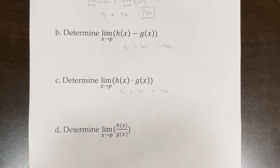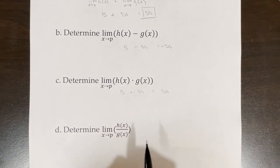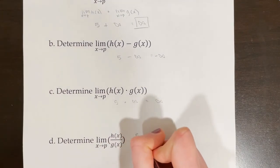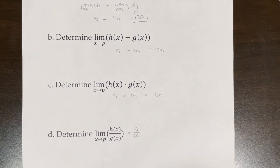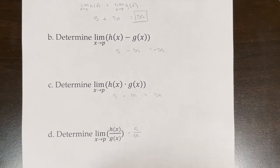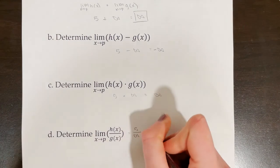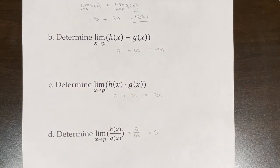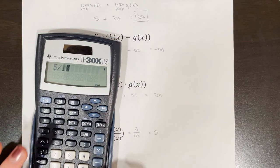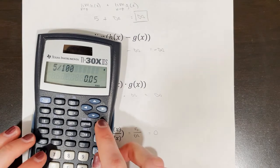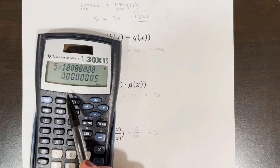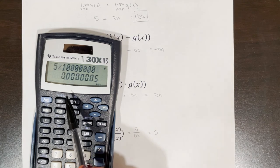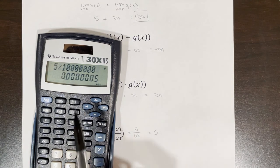Part (d) is different: the limit of h(x)/g(x) as x approaches p is really 5 over infinity. Dividing 5 by an extremely large number brings the result closer and closer to 0. For example, 5/100 = 0.05, 5/1000 = 0.005, and 5/1,000,000 approaches 0. So the limit is 0.